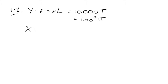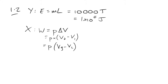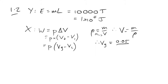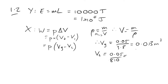Now for the work done in expanding: work done = PΔV. We already know the pressure. We need the change in volume: final volume minus initial volume, i.e., volume as a gas minus volume as a liquid. We don't have volume directly, but we have densities: V = m/ρ. Volume as a gas = 0.05 / 3.8 = 0.013 m³. Volume as a liquid = 0.05 / 810 = 6.2×10⁻⁵ m³ — fairly negligible, but let's include it.